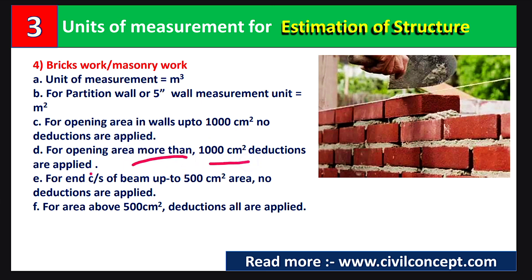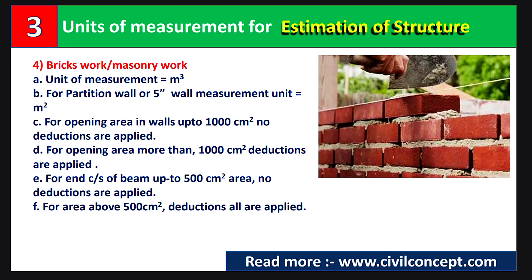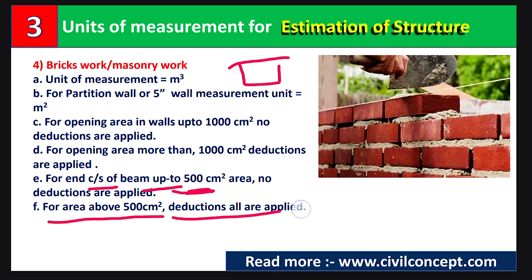For wall openings of more than 1000 cm² with doors and windows, deductions are applied to calculate the quantity of brickwork. For the end cross-section of a beam on the wall, if the area is up to 500 cm², no deduction is applied. For beam cross-sections above 500 cm², deductions are applied.